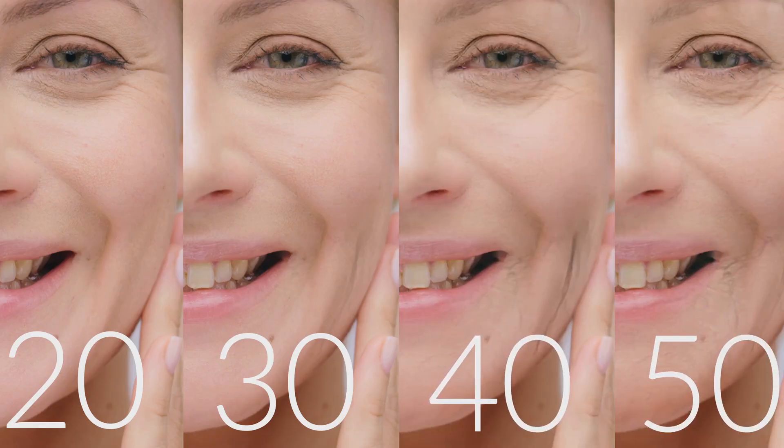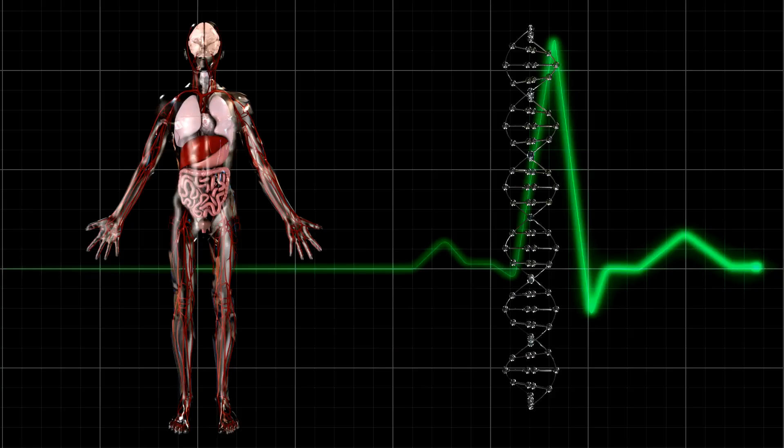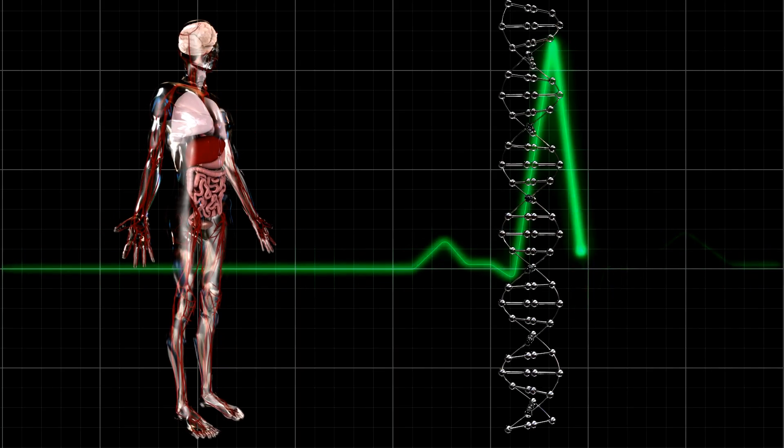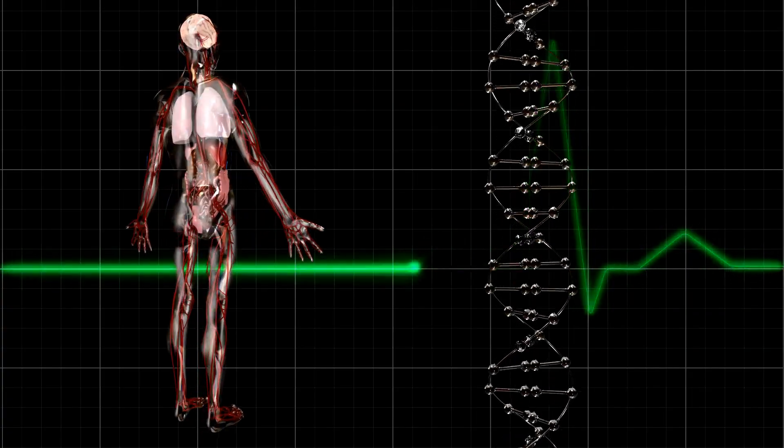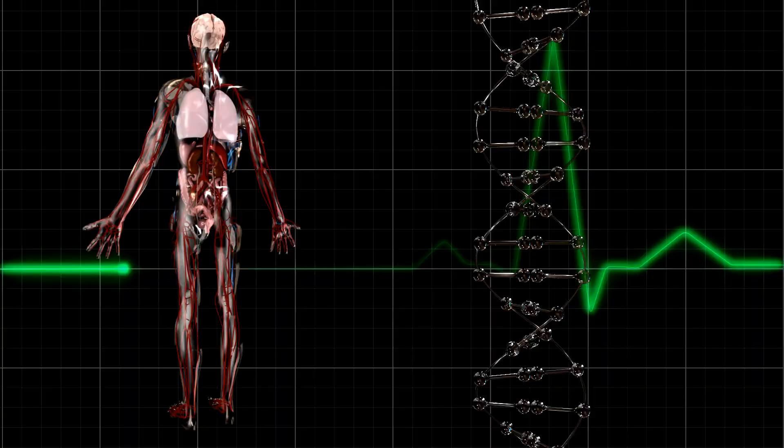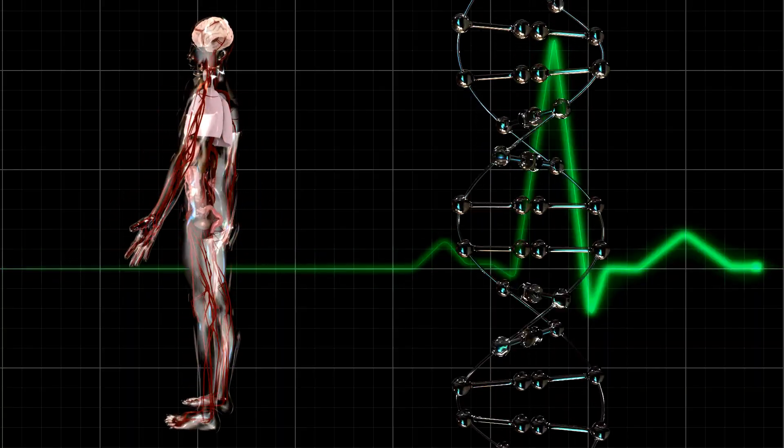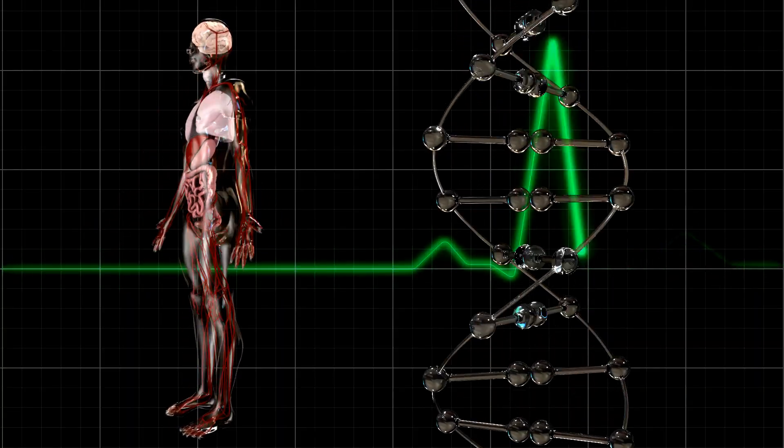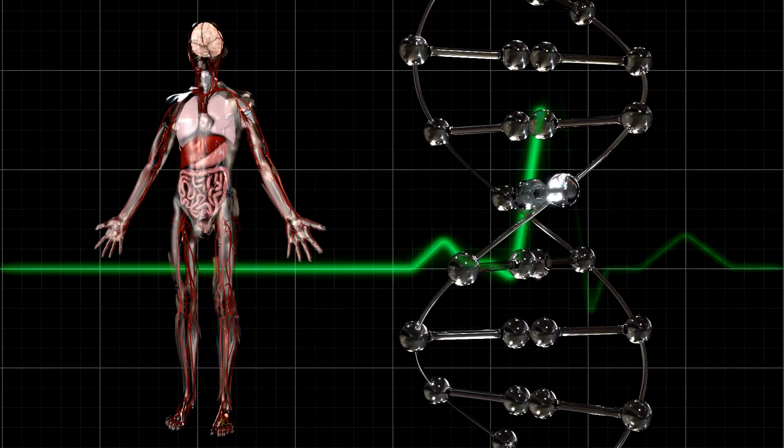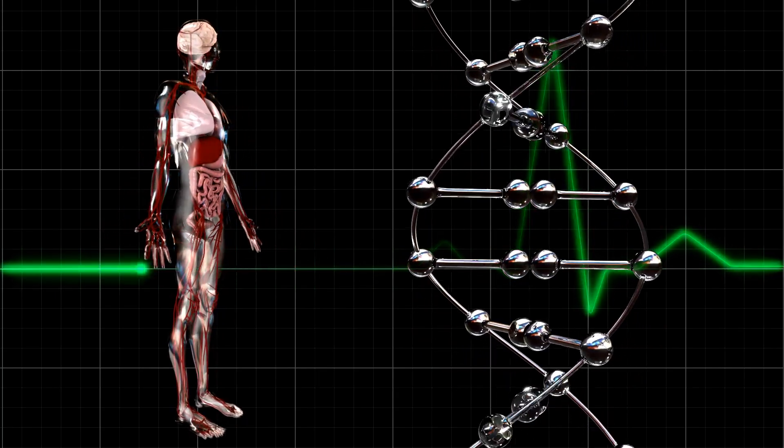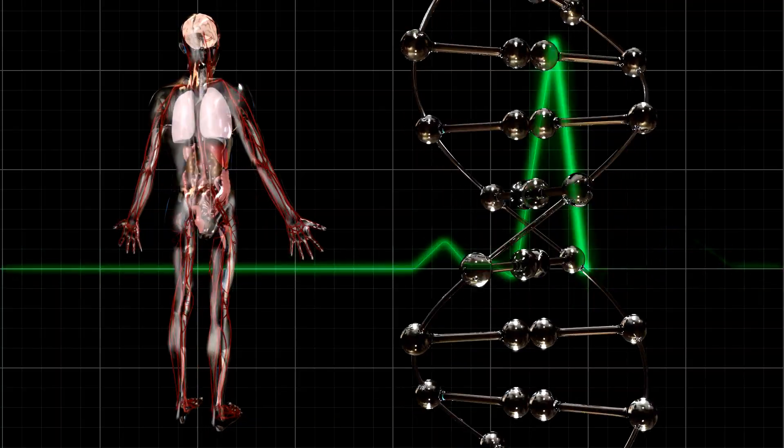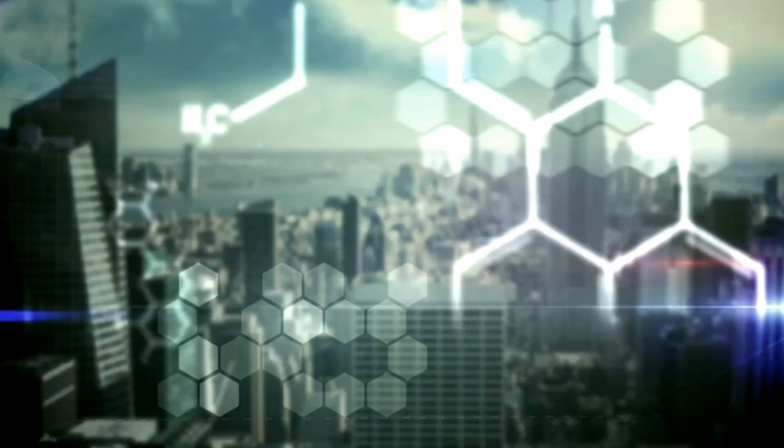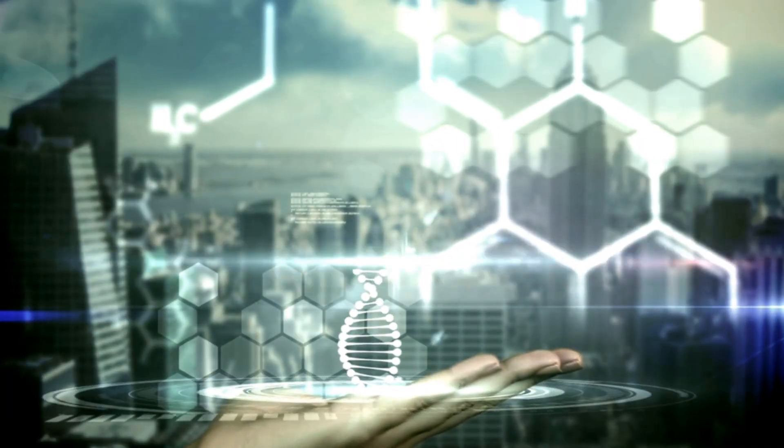And it doesn't stop there. Faulty epigenetic switches are involved in a huge range of conditions. In metabolic disorders like diabetes, they can mess up how the body processes sugar. In autoimmune diseases like lupus, they can cause the immune system to attack the body's own tissues. And in the brain, they're being linked to neurological and neurodegenerative disorders.